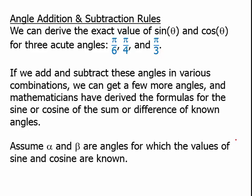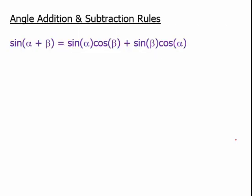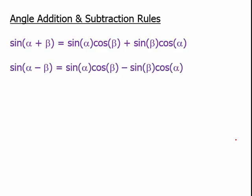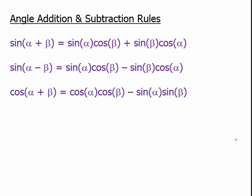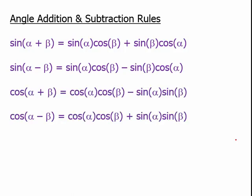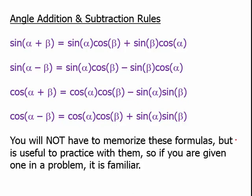Assume that alpha and beta are angles for which we know the values of sine and cosine. These four formulas are the sine of alpha plus beta, the sine of alpha minus beta, the cosine of alpha plus beta, and the cosine of alpha minus beta. You do not have to have these four complicated formulas memorized. The test will give you one of these if you're expected to know it. But it's useful to practice with them, so if you are given one in a problem, it is familiar.